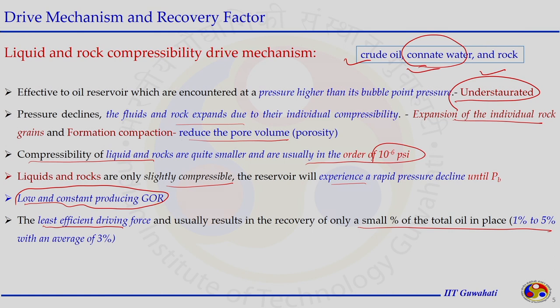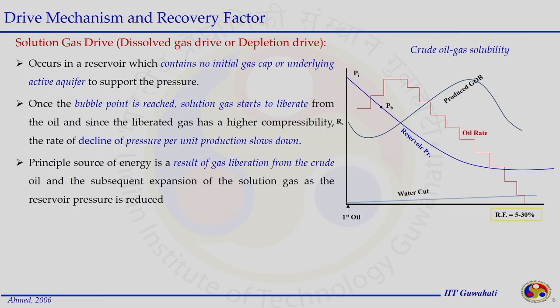The liquid and rock compressibility drive mechanism is considered the least efficient driving force — the recovery is very small, only 1 to 5 percent, with an average of 3 percent of the original oil in place. The four performance indicators are GOR, reservoir pressure, oil rate, and water cut, which characterize reservoir performance in terms of drive mechanism and maximum achievable recovery.